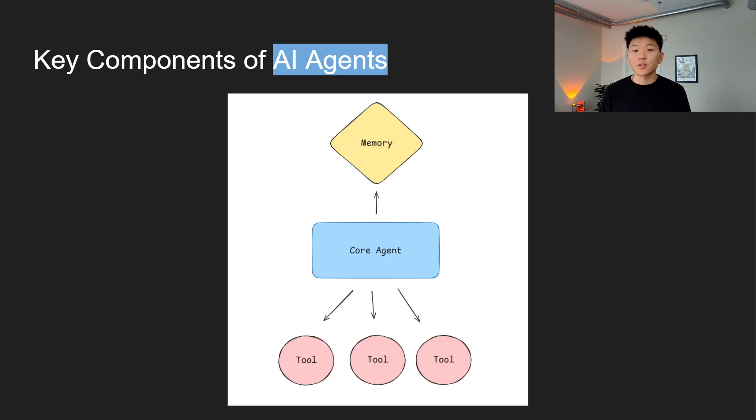Then we have tools. These are the external resources or APIs that the agent is going to use in order to perform specific tasks and take action. Whether it's sending emails or managing your calendar, pulling data from a database, tools are what give the agent the arms and legs. The more tools that you give your agent, the more versatile it becomes, but it's all about finding that balance.